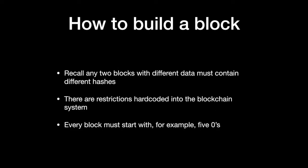Recall that blocks with different data must have different hash codes — for all practical purposes, we can assume so. There are restrictions hardcoded into the blockchain system: every block's hash must start with, for example, five zeros. How is that possible? If I already have data I want to add onto the new block, how am I supposed to control the hash? The hash comes from a preset algorithm, so how do I control what the algorithm spits out?